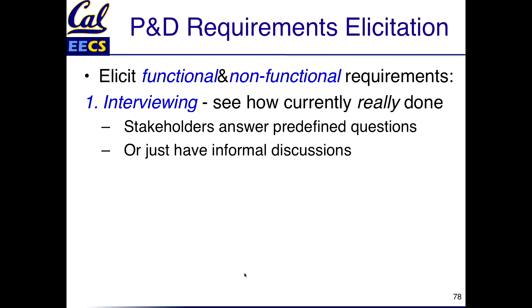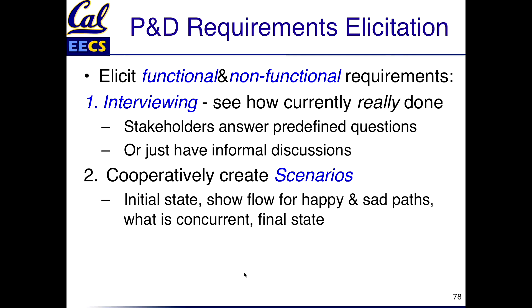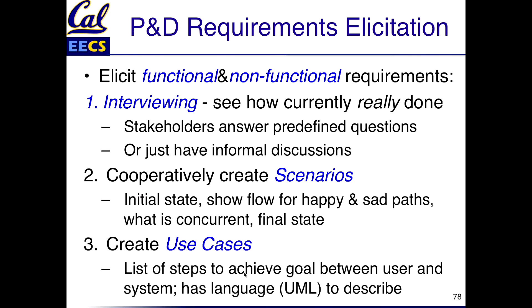The project manager tries interviewing — you want to find out how the work is really done, not the way it's supposed to be done. Maybe you send a questionnaire to all the stakeholders, or just have informal discussions, trying to figure out how it's really done today. You work with the customer to create scenarios: the initial state, the flow for happy and sad paths, what can be done concurrently, and the final state. A third approach is use cases, using the Unified Modeling Language — UML — which has stick figures showing all the steps from user and system to achieve the goal.